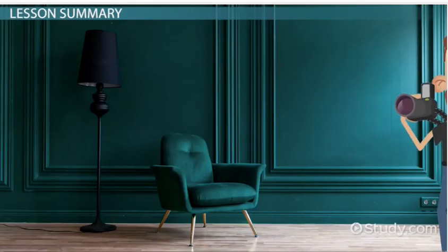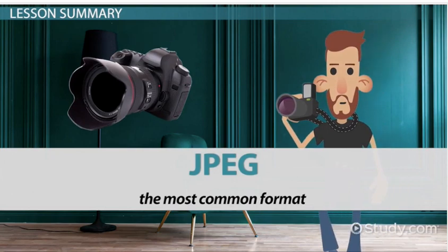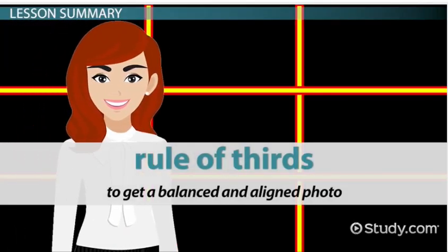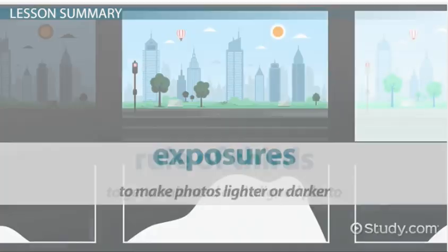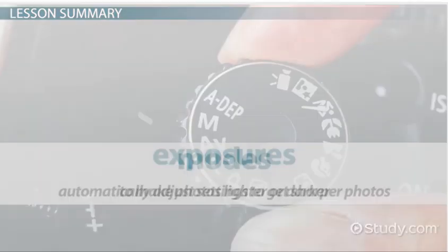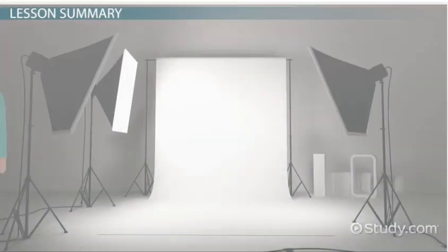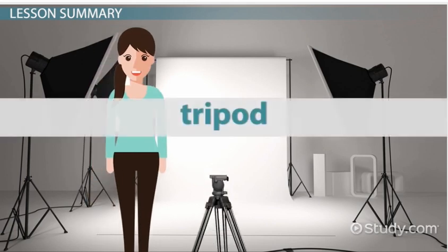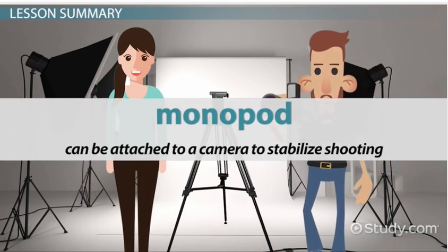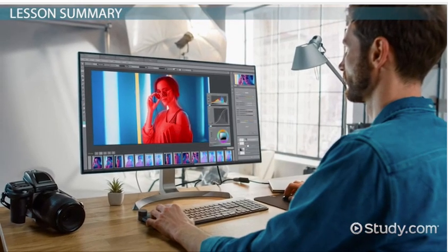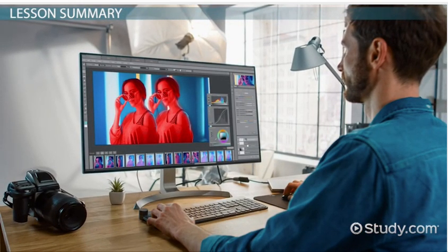Common formats and file types include JPEG — the most common format; RAW — used for additional editing; and TIFF — used for enlargements. Many photographers use techniques like the rule of thirds to get a balanced and aligned photo, different exposures to make photos lighter or darker, and modes which automatically adjust settings to get sharper photos. The right equipment also helps — a tripod or monopod can stabilize shooting, and editing software, apps, and filters can adjust color and brightness and instantly share photos with other people.